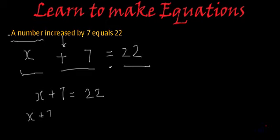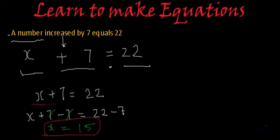So x plus 7 minus 7 will be equal to 22 minus 7. This 7 and this 7 will get cancelled. 7 minus 7 is 0, so you will get x equal to 22 minus 7, which will be 15. So 15 is a number—when you increase it by 7, you will get 22. And this was the equation which we have formed based on that statement.